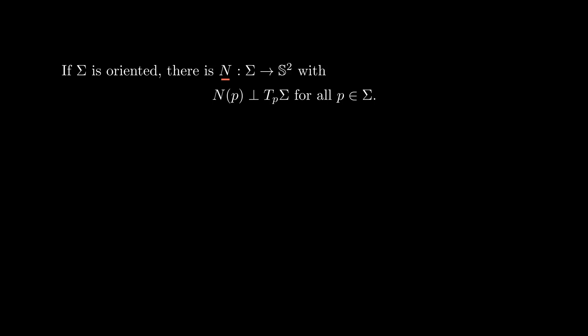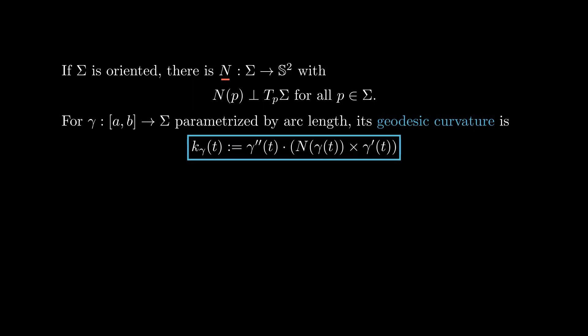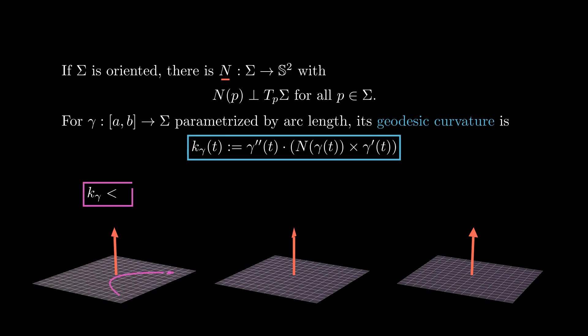Recall that if we are on an oriented surface, we have a Gauss map N, a smooth function that assigns to each point of the surface a unit vector perpendicular to the surface. Given a smooth curve gamma parametrized by arc length, we define its geodesic curvature at the point gamma(t) to be the dot product between its acceleration and the cross product between N and its velocity at time t. The geodesic curvature generalizes the notion of signed curvature for curves in R2 discussed in lesson 7. It is negative if the curve is bending right, zero if it is going straight, and positive if the curve is bending left, when seen from the tip of N. This is why geodesics are called the straight trajectories in surfaces.